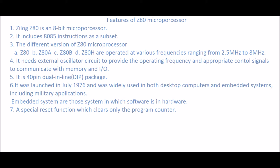It needs an external oscillator circuit to provide the operating frequency and appropriate control signals to communicate with memory and I/O devices. It is a 40-pin dual-inline package. It was launched in July 1976 and was widely used in both desktop computers and embedded systems, including military applications and embedded systems in which software is installed in hardware.